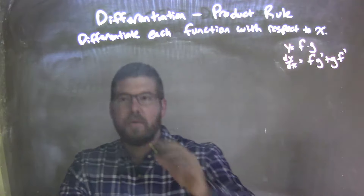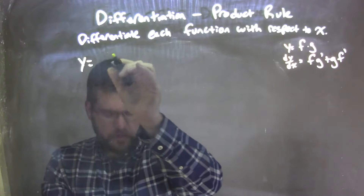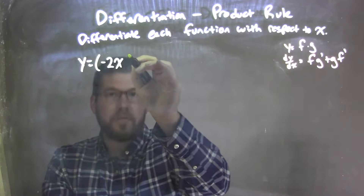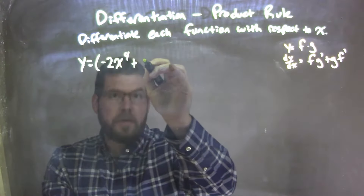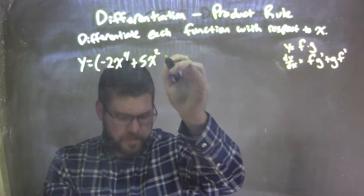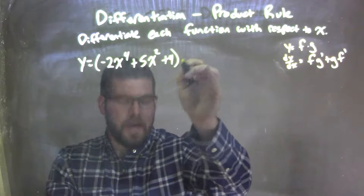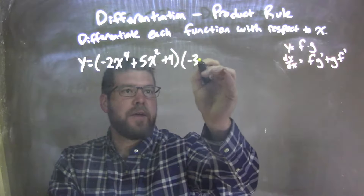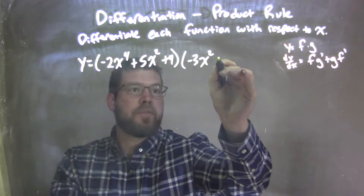So if I was given this function, y equals, in parenthesis, negative 2x to the 4th plus 5x squared plus 4, and we're going to multiply that by a second parenthesis of negative 3x squared plus 2. To apply the product rule, I have to have two functions that I'm multiplying together, which I have — we have our two functions here, this parenthesis and that parenthesis.